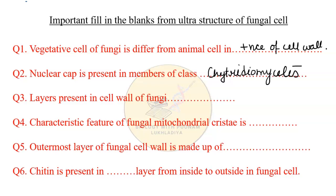The next fill-in-the-blank is: how many layers are present in the cell walls of fungi? We have studied that in fungi, starting from the plasma membrane outward, there are four layers present in the cell wall.